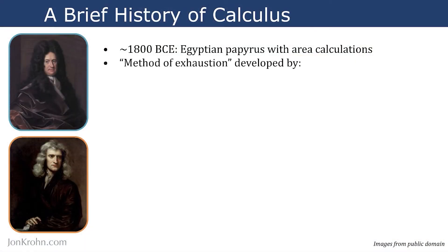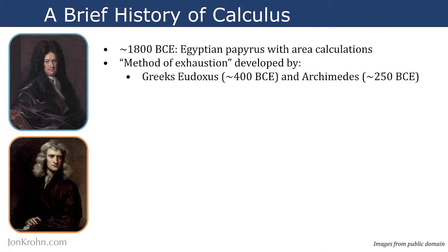Later, much later, something called the method of exhaustion — a specific technique for finding the area of curved shapes — was developed. Circles could be notoriously difficult to find the area of without something like the method of exhaustion. This technique was developed by the Greeks about 2,000 years after Egyptians had started working with area calculations. Eudoxus, around 400 BCE, and Archimedes, around 250 BCE, developed this method of exhaustion, which you can still use today to find the area of curved shapes.